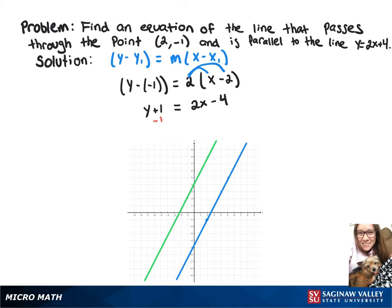Now we can subtract 1 from both sides, and that gives us our equation y equals 2x minus 5.